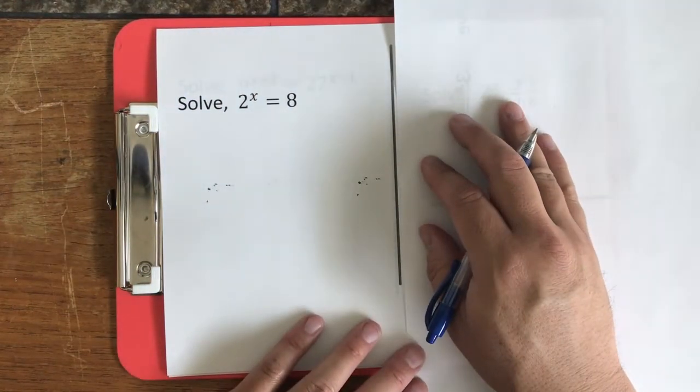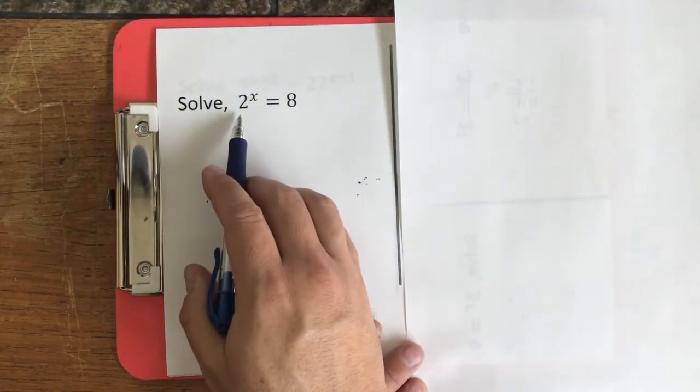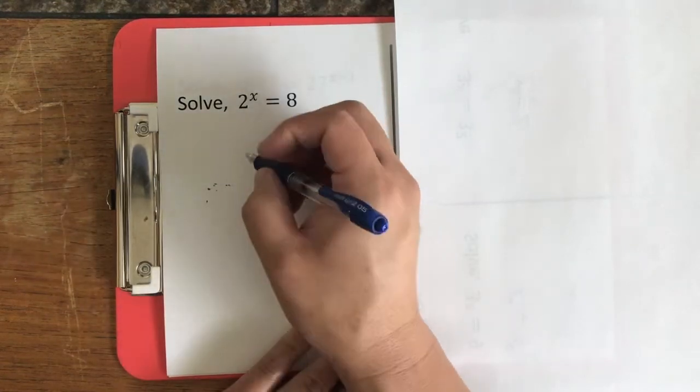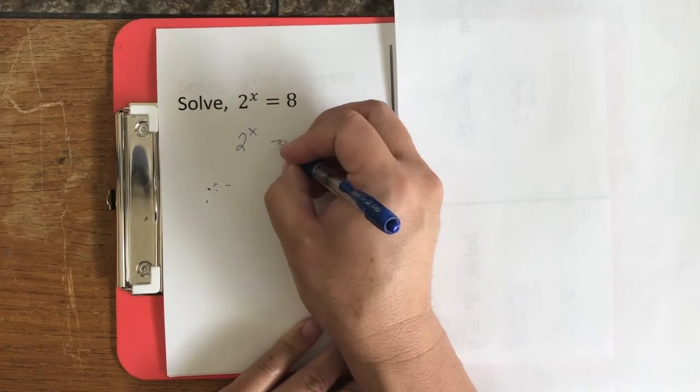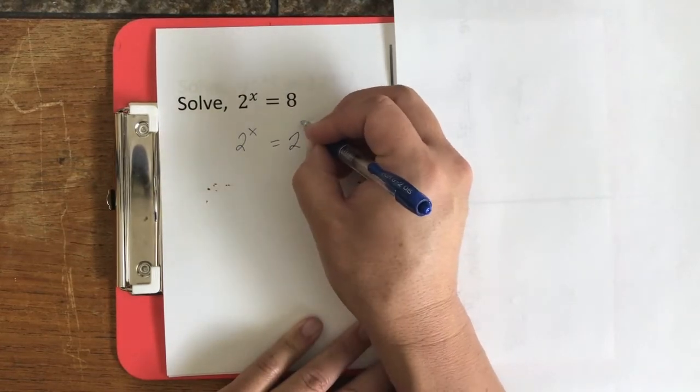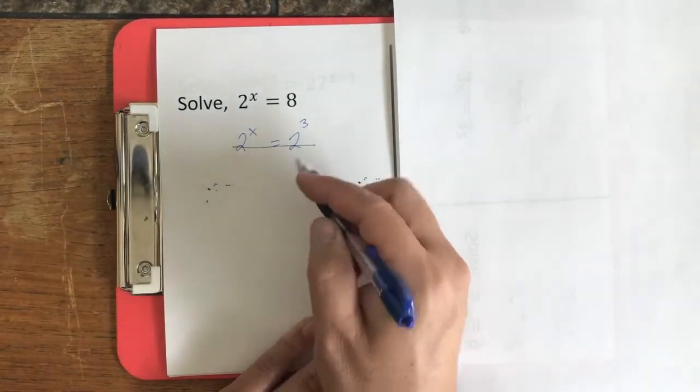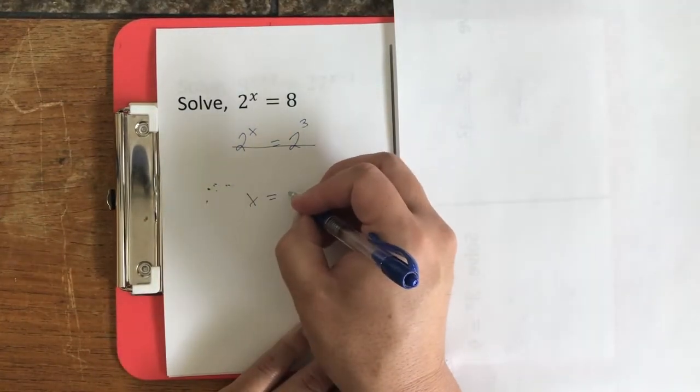So let's do the same thing for this problem. Over here, we have a base of 2, so we want the bases to match. 8 is equal to 2 cubed. Now that the bases match, x is equal to 3.